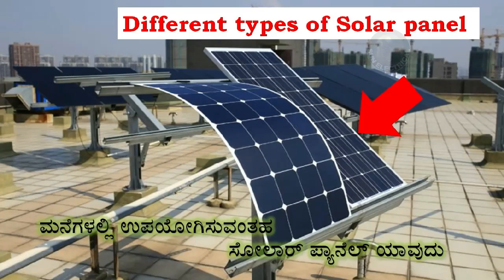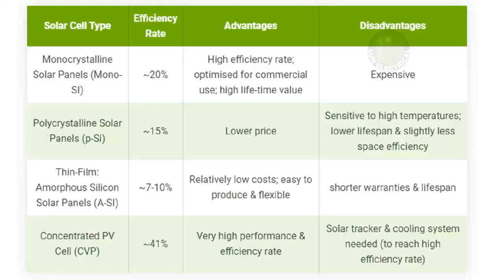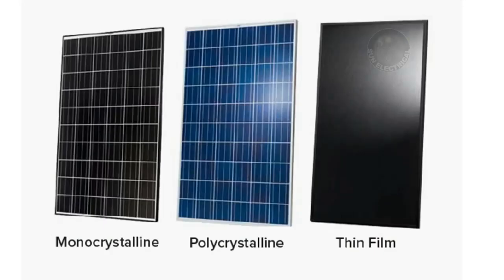Silicon is the main material used to make solar panels. The silicon is purified and then made into different types.